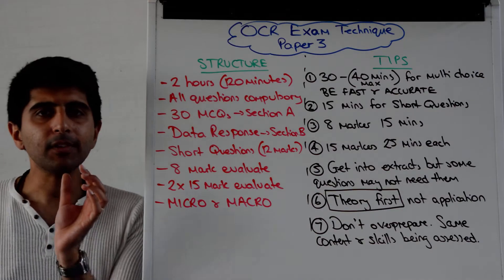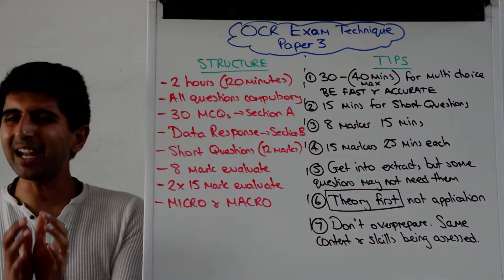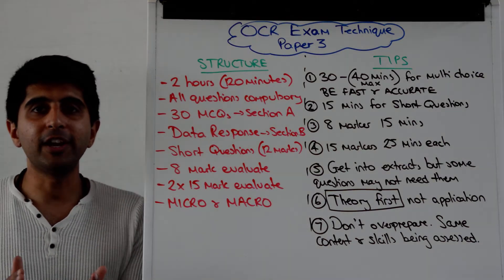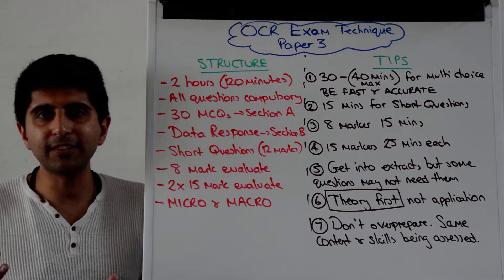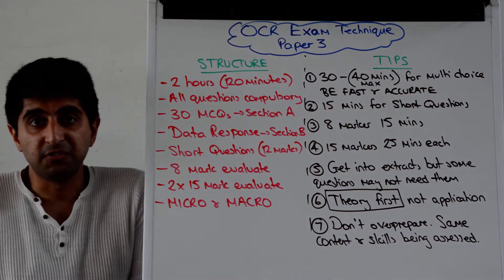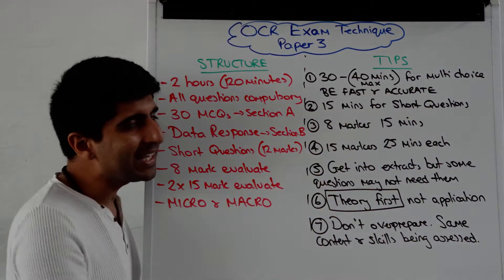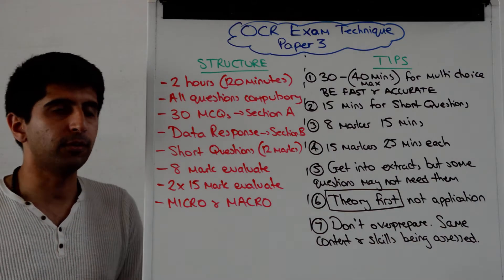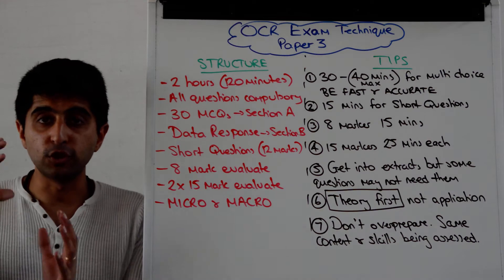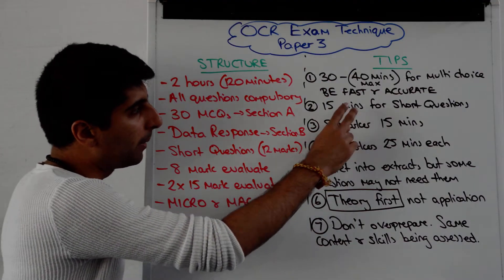Thirty minutes should be your target time to answer the multiple choice questions — no more than 40 minutes. My recommendation is 30 minutes: a minute per question, and that should be fine because some questions you can answer in maybe 15–20 seconds, while others might take a minute and a half. Average a minute a question and you'll be fine. The key is to balance speed and accuracy. Any time you save on Section A will be very valuable when you get on to Section B, which requires you to read the extracts in detail.